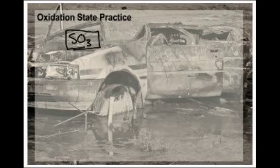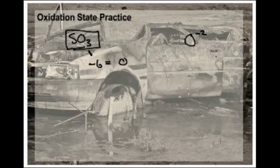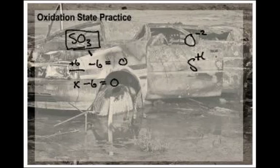Oxygen is always minus two, so O has an oxidation number of minus two. And then the sulfur — we have to just add them up. It's just mathematics. So it's going to be negative six, because we have three oxygens. And this is a compound, so compounds add up to zero — there's no charge. So what must be the charge of the sulfur? It's going to have to be positive six. It's like X minus six equals zero. So the S has an oxidation number of plus six.